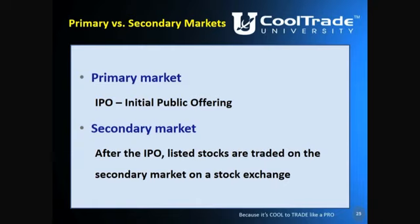After that first sale, it goes on to the secondary market — the market itself where it's traded between people on exchanges like the New York Stock Exchange or the Nasdaq as a listed stock. Before the primary market, there's what's called the direct market, where it goes directly to certain inside investors. This is where Zuckerberg and other investors were able to buy it at a very cheap price — maybe pennies or a few dollars per share — so when it went public and opened at $35 a share, that was a huge payday for them.